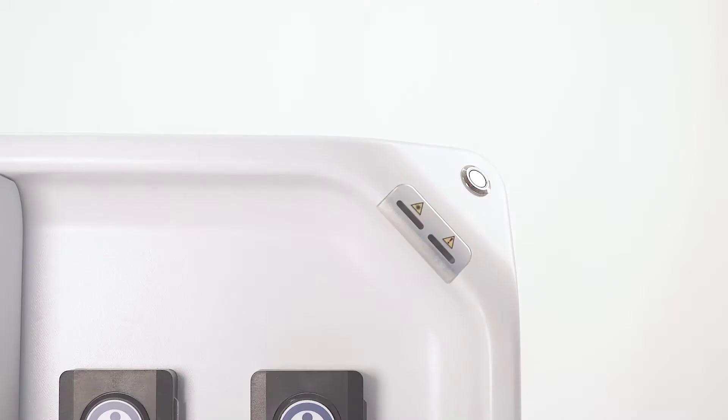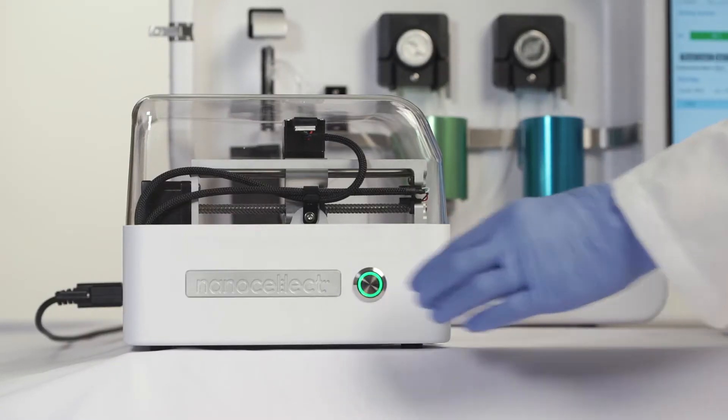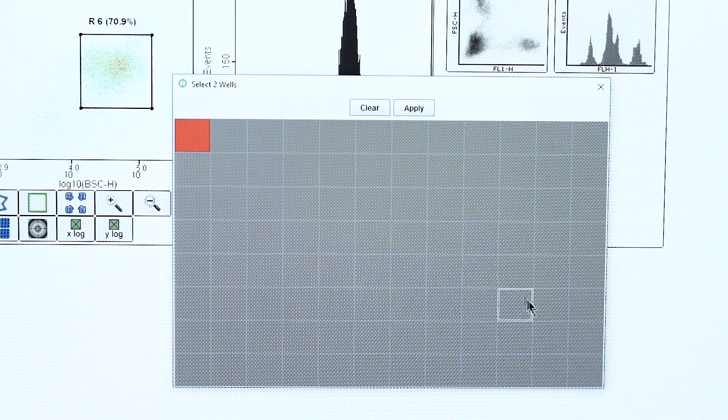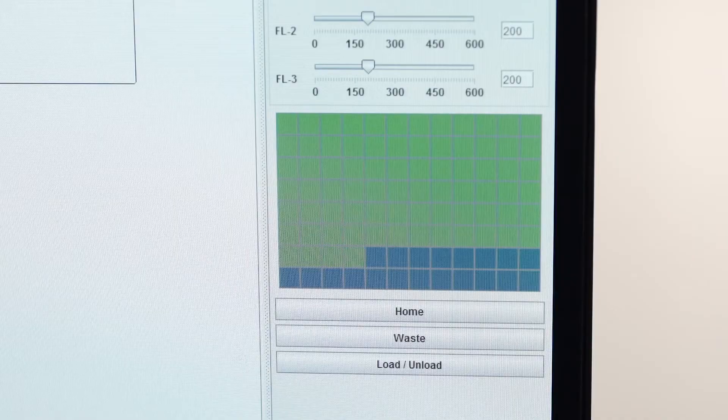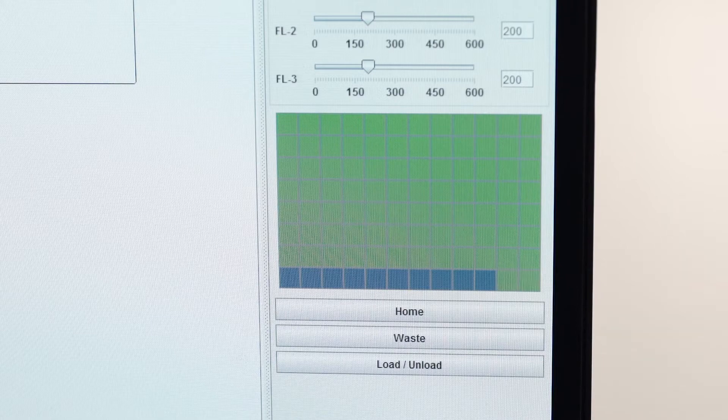The single cell dispenser allows us to sort directly into 96 or 384 well plates. This is helpful for people who are doing antibody discovery, cell line development, or working with single cells upstream of genomic applications.